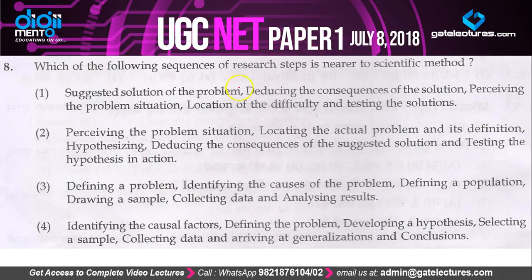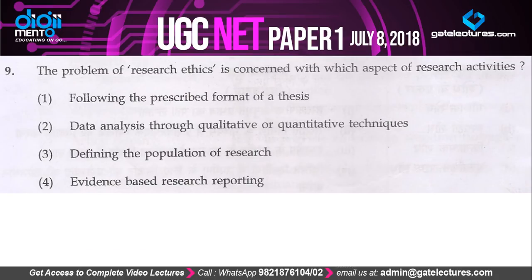Question 8: which of the following sequences of research steps is nearer to the scientific method? Option 3 — defining a problem, identifying the cause, defining population, drawing a sample, collecting data, and analyzing results — is closer to the scientific method. So the correct answer is option 3.